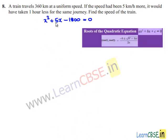Comparing this equation with the standard equation ax² plus bx plus c equals 0, we get a is equal to 1, b is equal to 5, and c is equal to minus 1800.